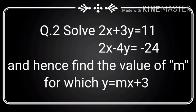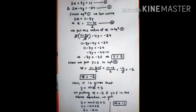Question number 2: solve 2x plus 3y equal to 11 and 2x minus 4y equal to minus 24, and hence find the value of m for which y equal to mx plus 3. From equation 1 we write 2x equal to 11 minus 3y, so x equal to (11 minus 3y)/2 — this is equation 3, where x is expressed in terms of y.